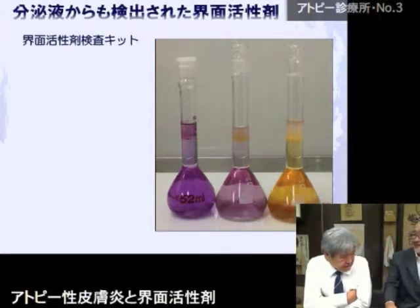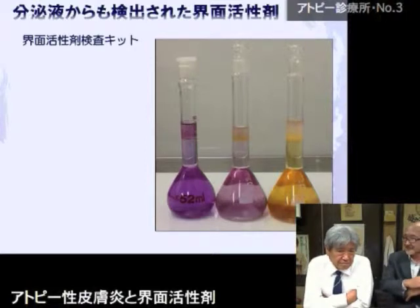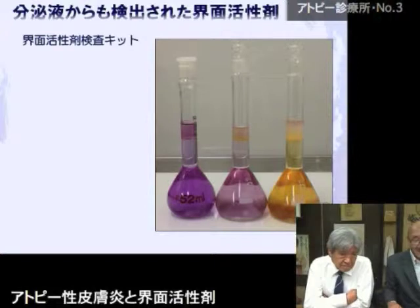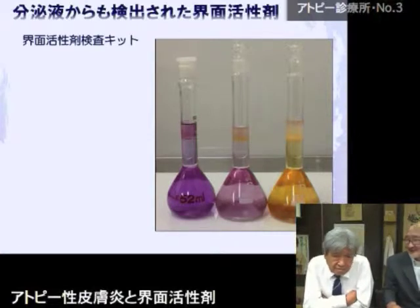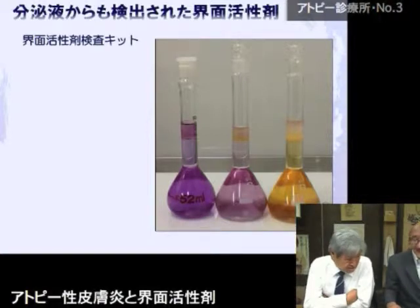皮膚の細胞は皮下組織から順番にできて、どんどん表面に押し上げられ、最後には角質になって剥がれる。このサイクルが皮膚の場合は30日くらいです。我々の体は常に新しい細胞で外に出す仕組みがあります。多くのアトピー性皮膚炎に困られている方がいるので、ぜひ先生に協力して、いろんな科学的データのベースになるようなご協力をしていただけるとありがたいです。